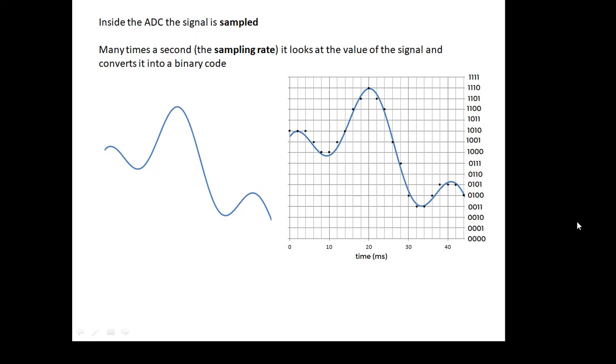Many times a second, what the machine does is it looks at the value of the voltage many, many times a second. It looks at the value of the voltage and it changes it into a binary code. So if you look at the graph here, many, many times a second, the level of the voltage is converted into a binary code. And you end up with a binary signal.